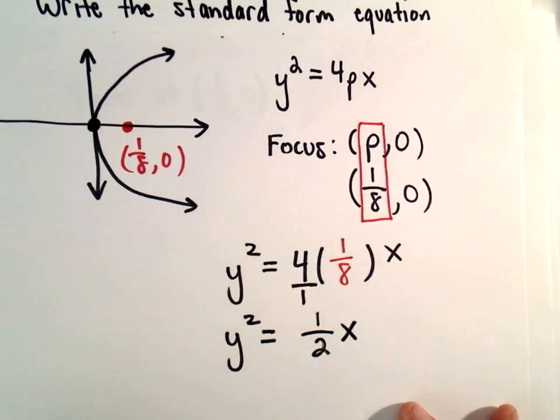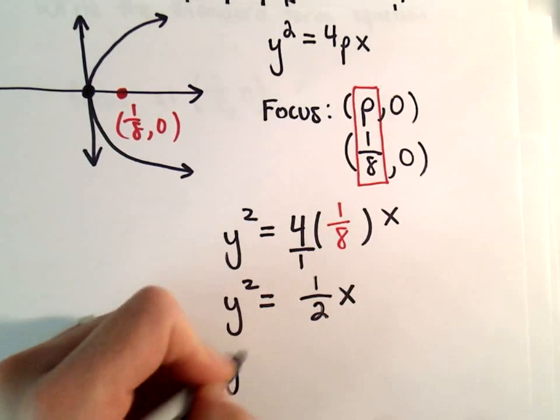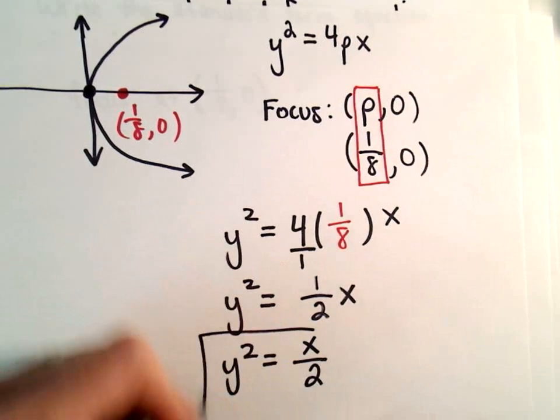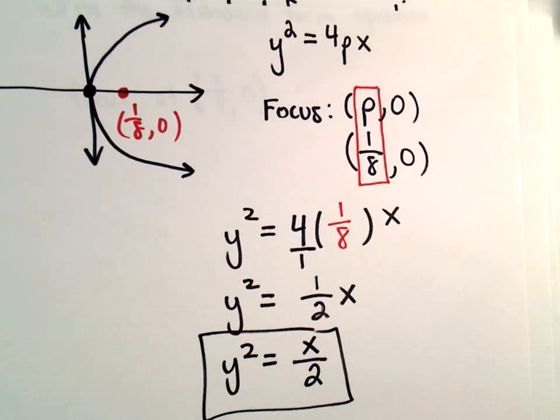Or if you wanted to you could write that as y squared equals x over 2. Either one looks good to me and now we've got the standard form of our parabola.